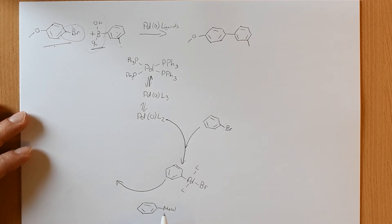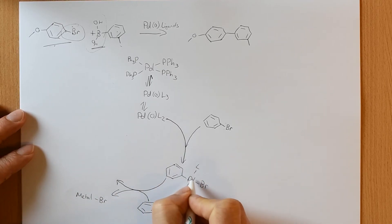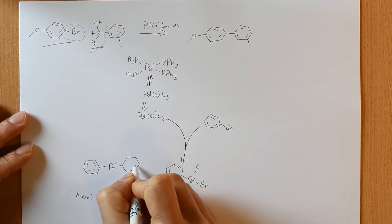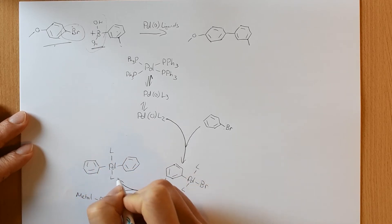What will happen here is that you get transmetallation. This carbon metal bond will exchange with that carbon metal bond, and this bromine will leave and you'll form a new metal halogen bond. So in this case, we'll end up with our metal bromide. And the palladium now is going to be coordinated to both of those aromatic rings. It still has its two ligands.